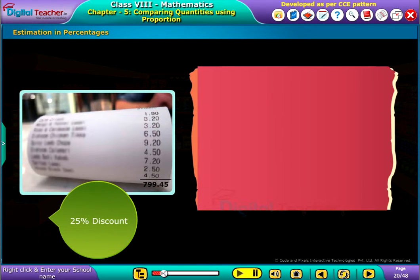In such a scenario, we need to round up the bill to the nearest tens, in this case rupees 800. As the discount given is 25 percent, first find the 10 percent of the total amount rupees 800, that is rupees 80.